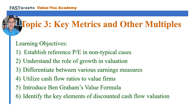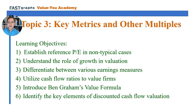We want to be able to differentiate between different ways that earnings are measured — the denominator of the price-to-earnings ratio, the E, can be measured different ways. We also want to look at other multiples beyond the price-to-earnings ratio, including cash flow ratios and EBITDA. We want to take a look at Ben Graham's value formula, and the logic behind discounted cash flow and the different elements that go into a discounted cash flow valuation.